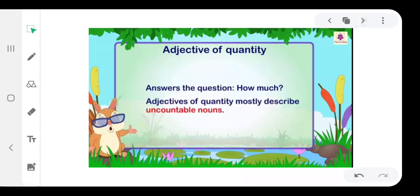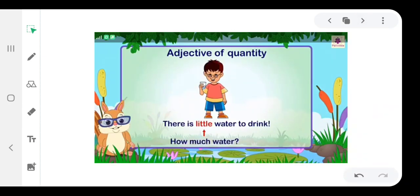Adjective of quantity. An adjective of quantity answers the question 'How much?' Adjective of quantity mostly describes uncountable nouns. For example, there is little water to drink. Little answers the question 'How much water?'